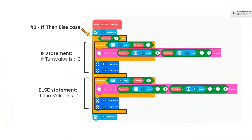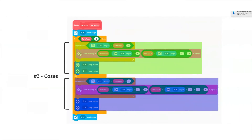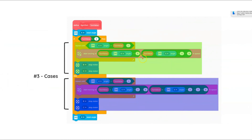Then we have the if-then-else block, which determines if the robot turns right or left. When the user types in the value of how far they want the robot to turn, they will either make it positive or negative. Positive will make the robot turn right and negative will make it turn left. So if turn value is greater than zero — in other words, if turn value is positive — it will execute the right turning program. If it is negative, it will execute the left turning program. For the rest of the program, it will either be executing the green bit of code or the blue bit of code.